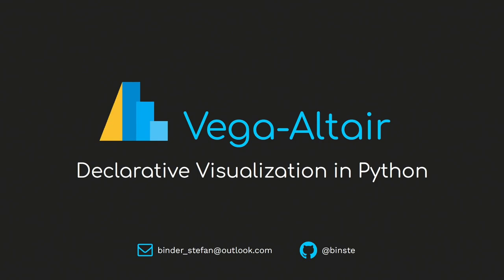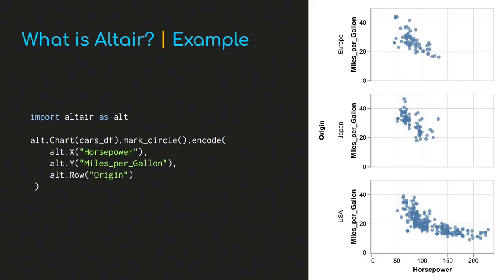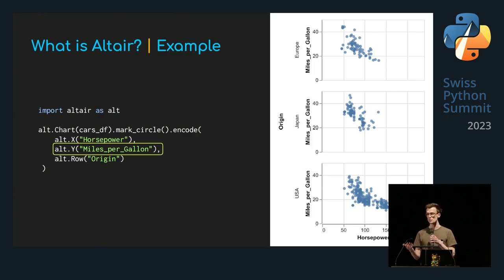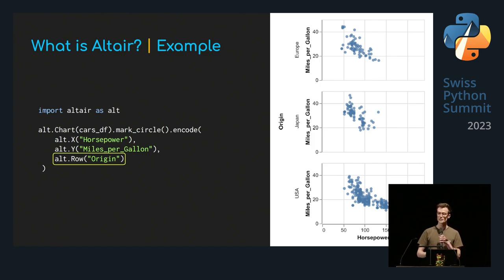I'm Stefan, and I'm very excited to talk about Vega-Altair. Altair is a Python package for data visualization. One special thing is it has a declarative API — you specify the requirements for your chart but don't have to tell the library how to implement it. No for loops. You just import it, pass a pandas DataFrame, say you want to plot data points with circles, encode the x-position to the horsepower column, the y-position to miles per gallon, and for each value in the origin column you get a new subplot row.